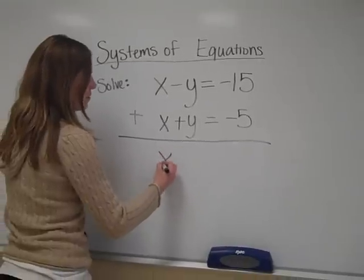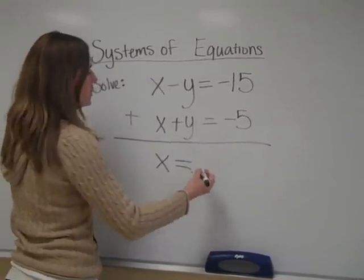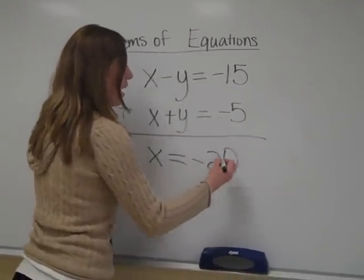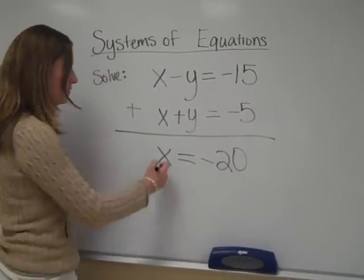So, here we go. I get x, the y's cancel out, is equal to negative 20. And, lo and behold, the x is already solved for. Yay!